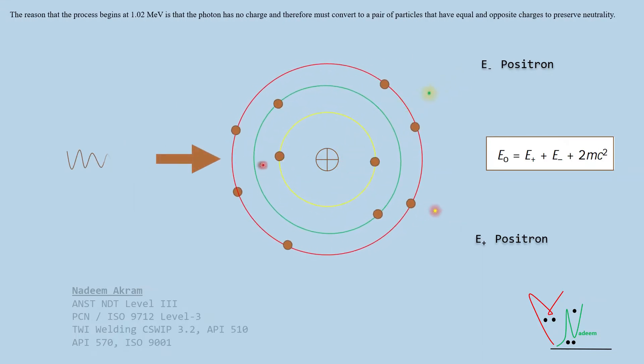The reason that the process begins at 1.02 mega electron volts is that the photon has no charge and therefore must convert to a pair of particles that have equal and opposite charges to preserve neutrality.